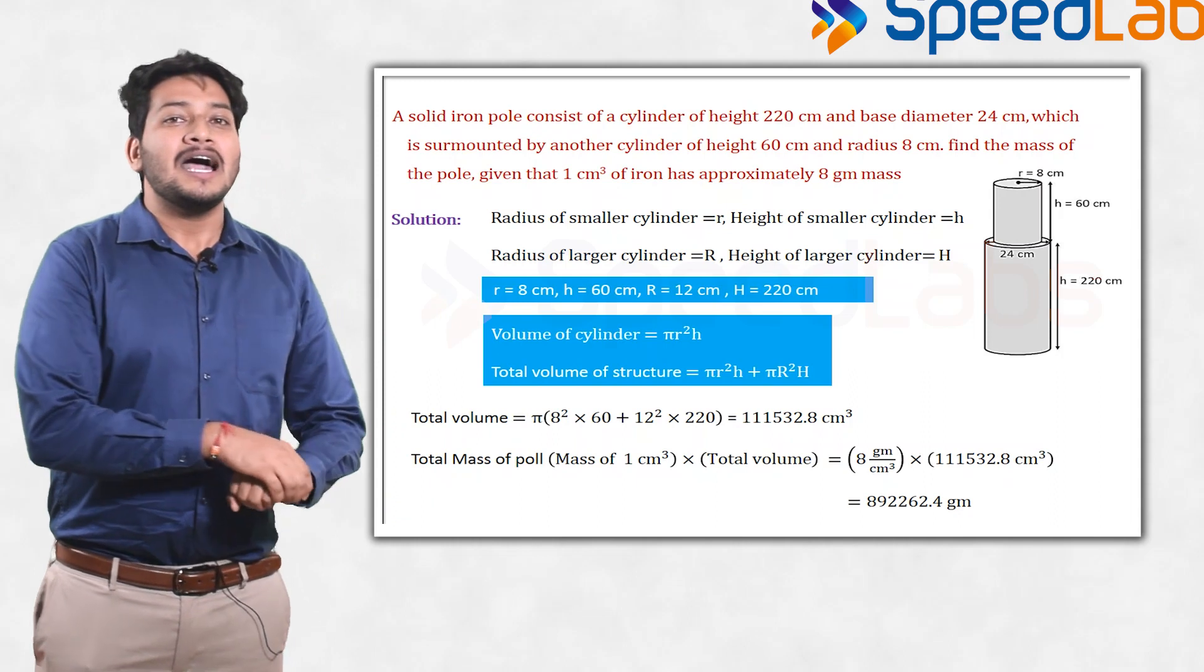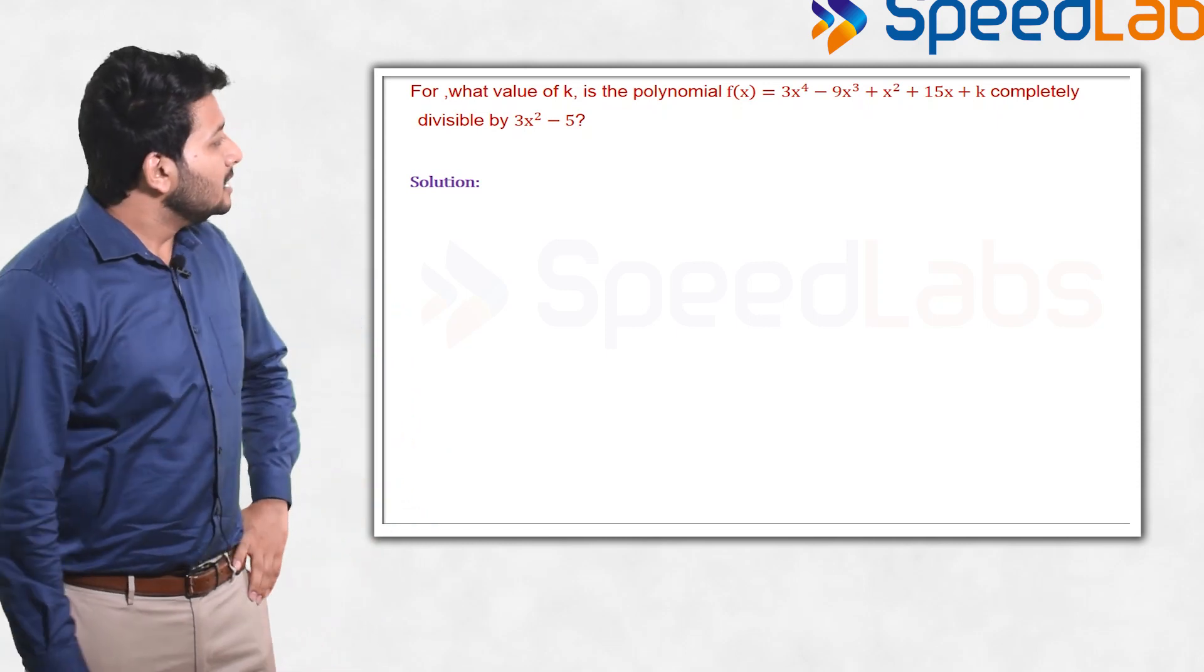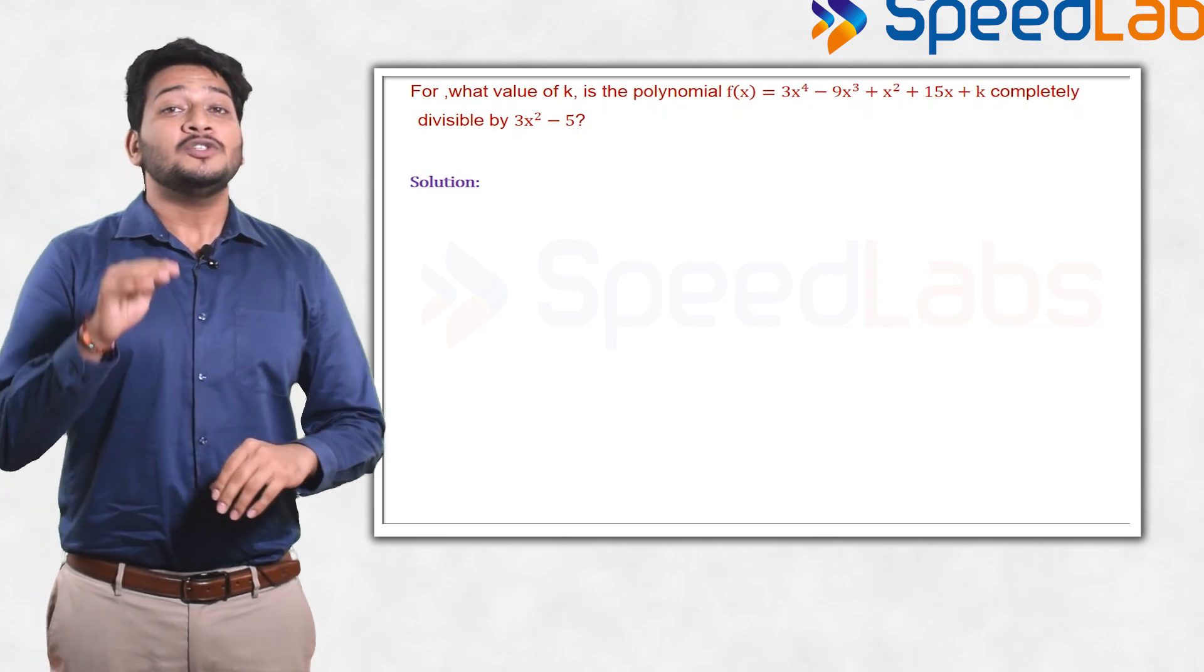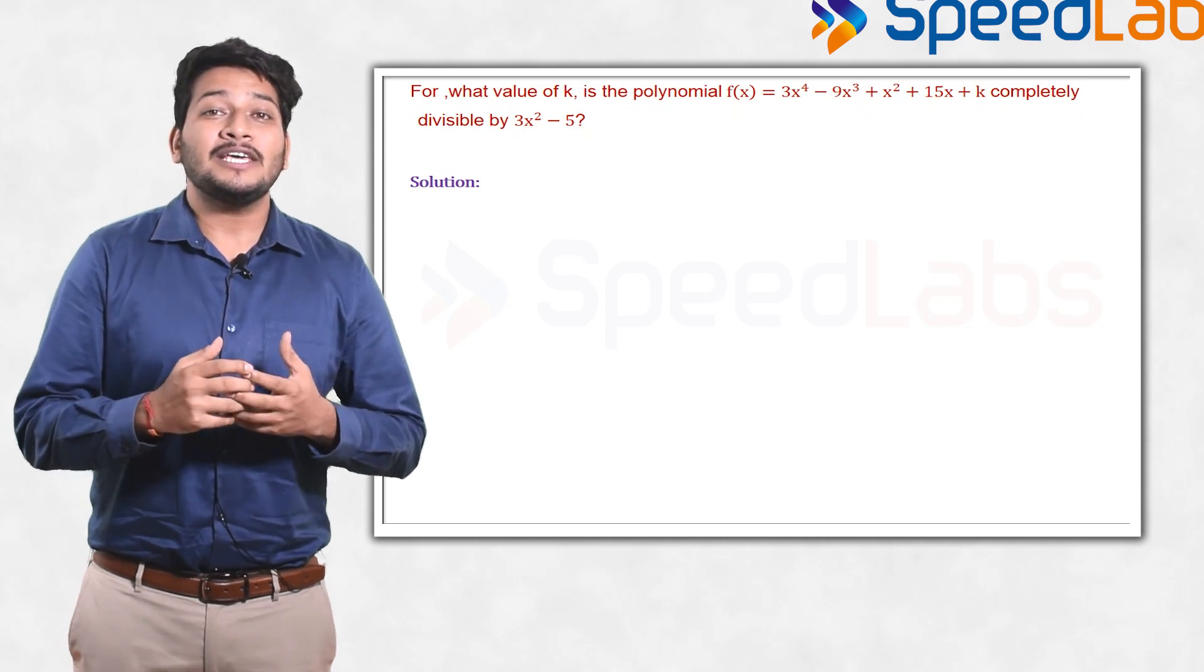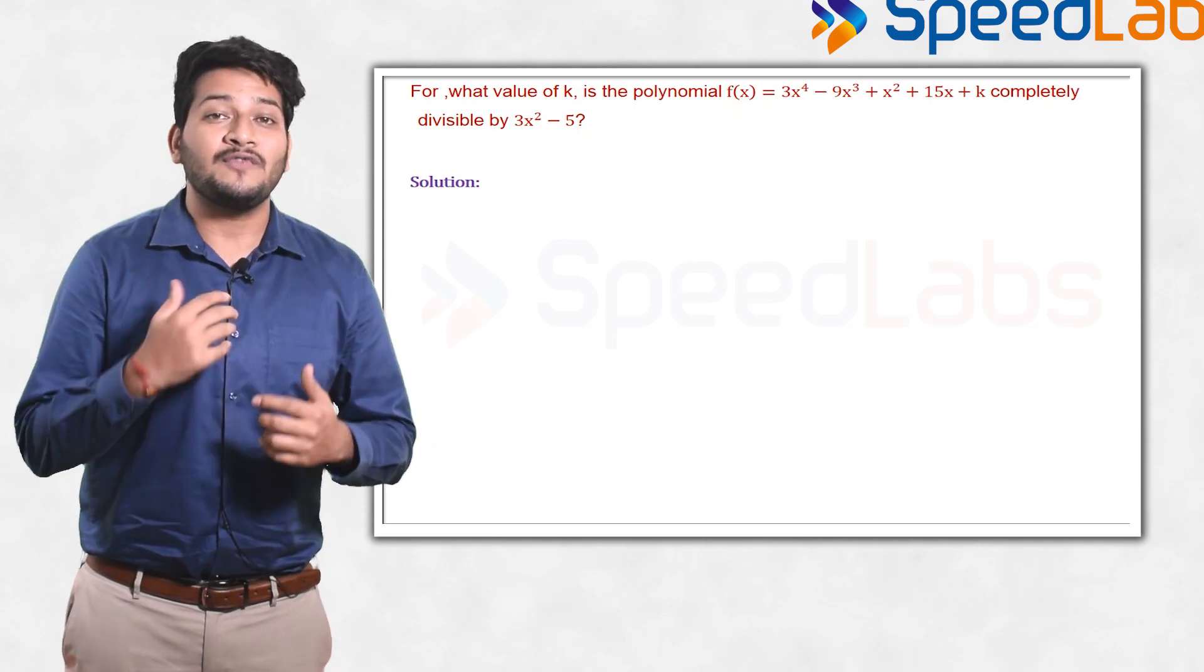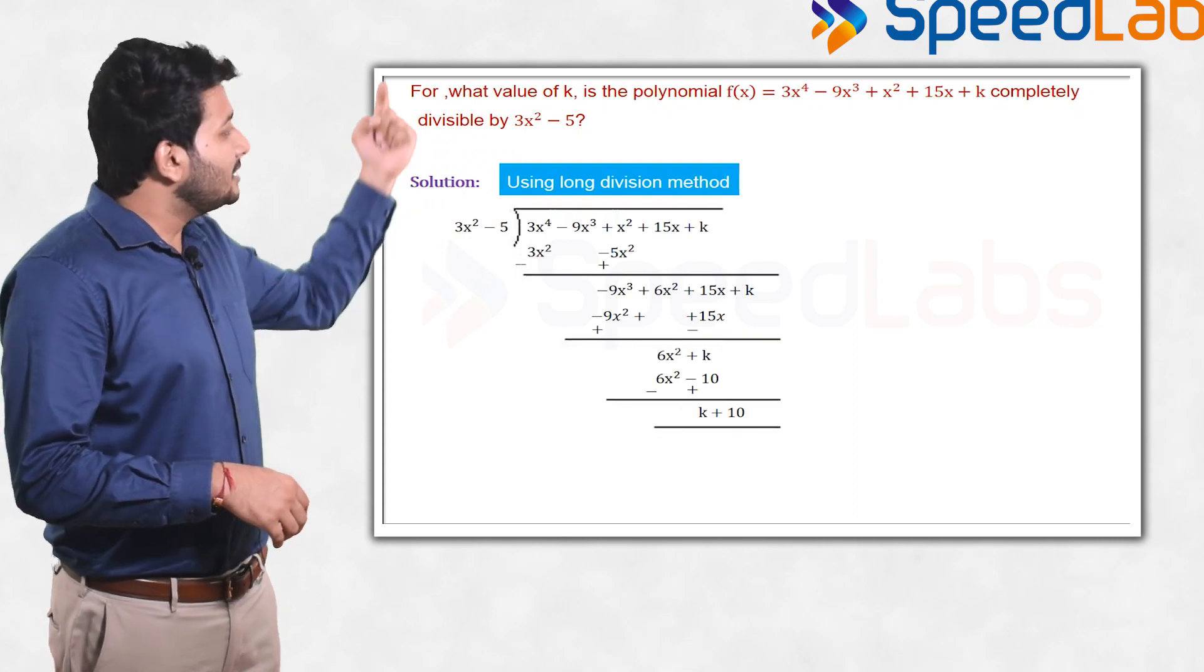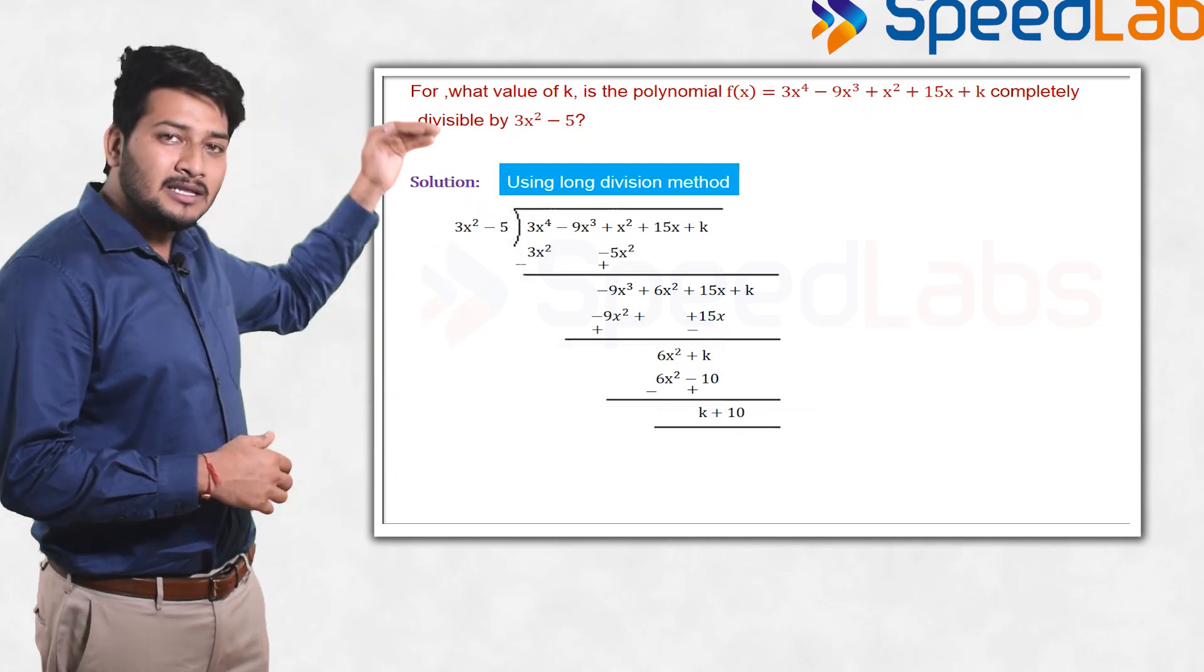Now one very good problem related to polynomials. In this question, you're given a polynomial and told it is completely divisible by 3x² - 5, so you have to find out the value of k. Completely divisible means the remainder will be zero. So find out what the remainder is. The process of division is very simple. You divide the first term by the first term of what you're dividing by, then multiply and subtract. You know the process of division. If you repeat this process until you get the remainder...